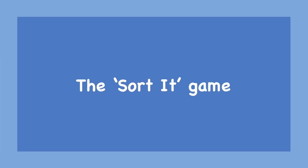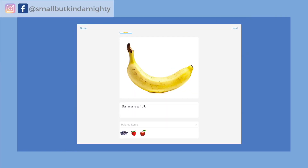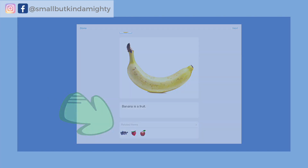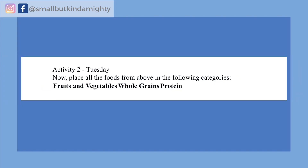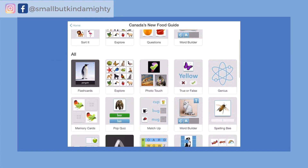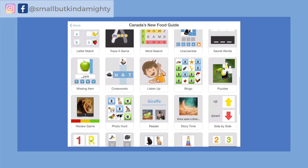Remember when we were creating our bits, I said it was important to indicate whether items were related — that was so we could categorize all our bits using the sort it game. Let me play a game of sort it and show you how that works.